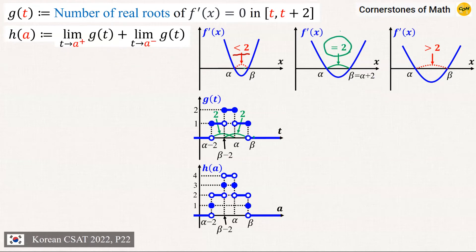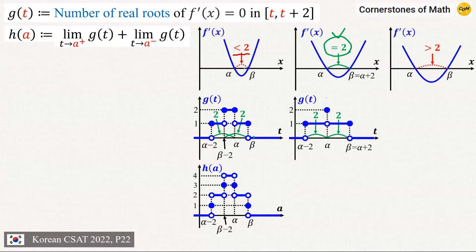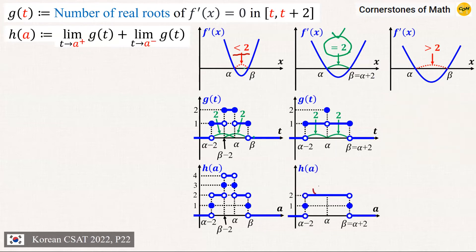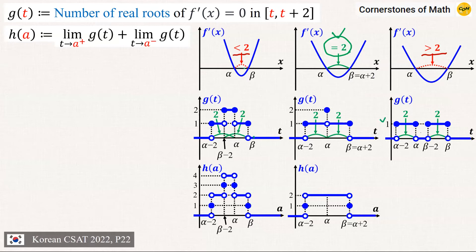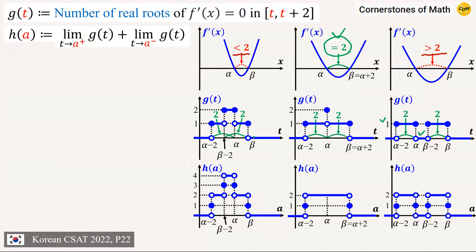Moving on to the case where the distance between α and β is exactly 2: the graph of g(t) shows that g(t) can still have the value of 2, but only at a single point, t = α. And for the graph of h(a), the value of h(a) can only go up to 2. Notice that the value at a = α is also 2, because the limit from the right is 1 and the limit from the left is also 1. Now for the final case, where this distance is greater than 2, g(t) can only have a maximum value of 1 and actually goes down to 0 in the middle. And for h(a), the graph now looks like this, which at this point shouldn't be that hard to understand.